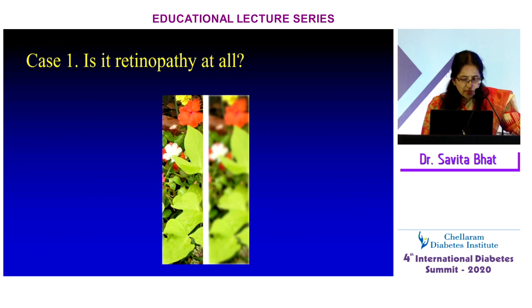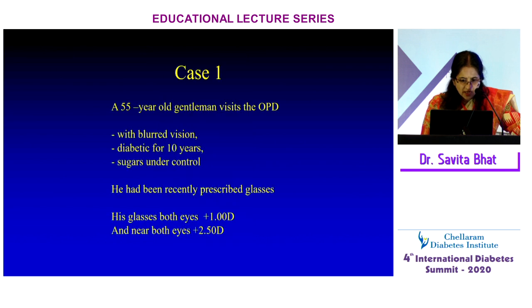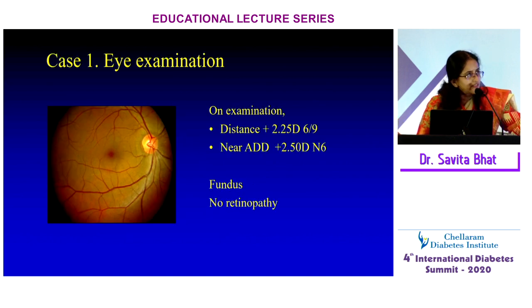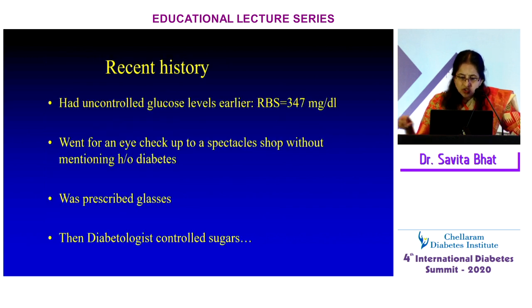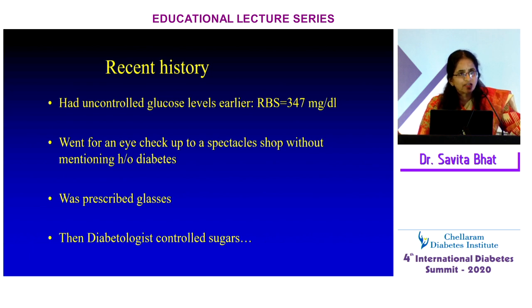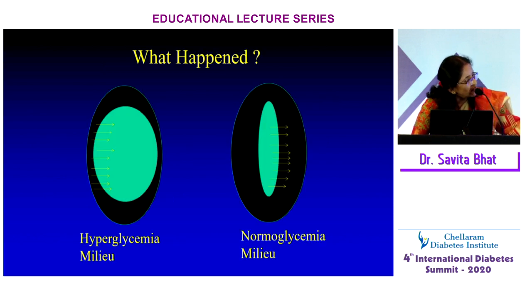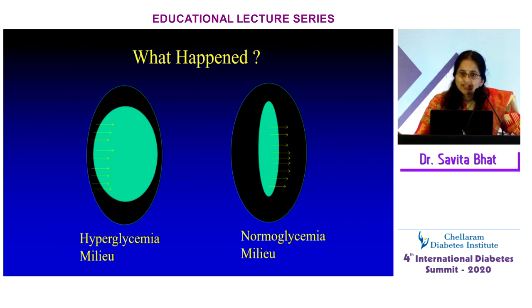Case one: A 55-year-old gentleman presented with blurred vision, diabetic for 10 years with sugars under control. He had been recently prescribed glasses and suspected retinopathy. On examination he had no retinopathy but a higher glasses number. On further probing, he had recent uncontrolled glucose levels with an RBS of around 347. He had visited an optician without mentioning his diabetes, was prescribed glasses, then visited his diabetician who corrected his sugars. He then found his glasses no longer worked.